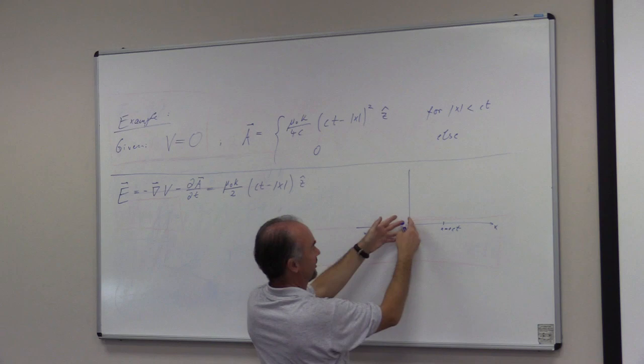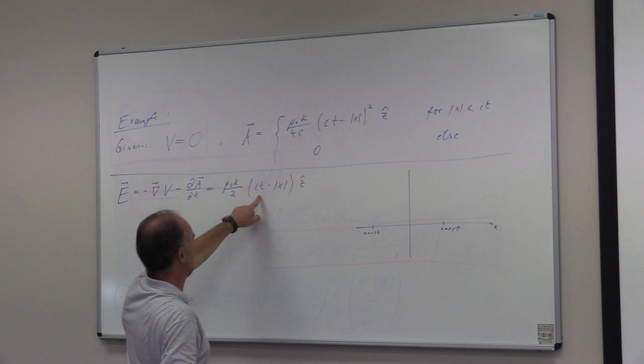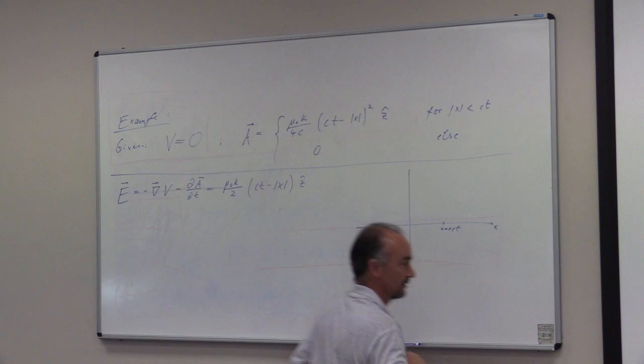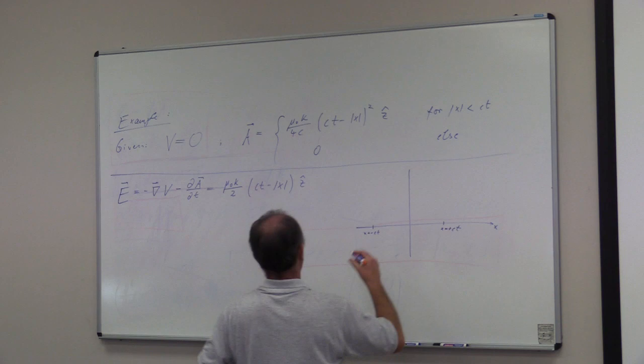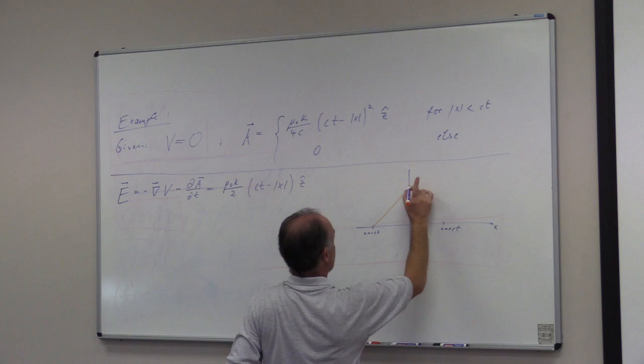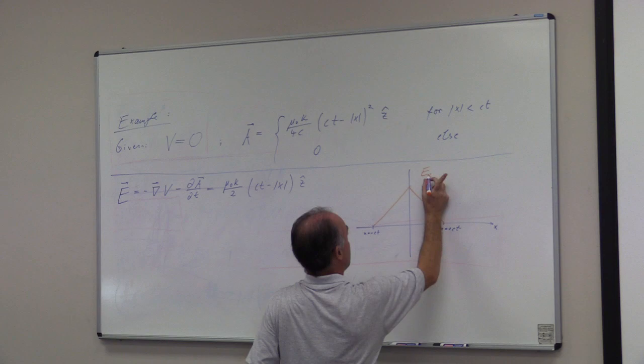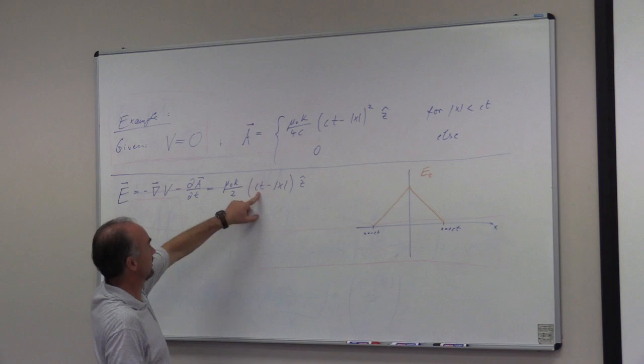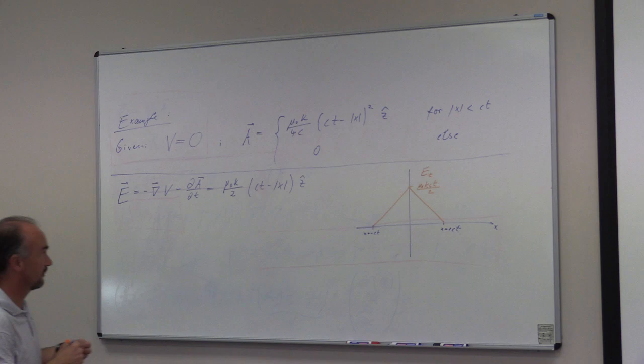And so for t equals zero, there's nothing there at all. As time goes on, we have a larger and larger region of space where we have a potential and we also have fields there. So the electric field goes positive because the derivative here goes essentially up to the limit. So we have an electric field that goes up here close to the maximum level. The maximum value for x equals zero is just mu naught k.